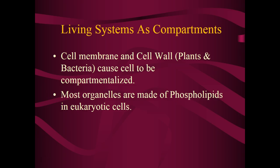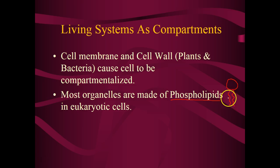Cell membranes are composed of phospholipids first of all, and phospholipids are the main component of any cell membrane. When we look at any cell membrane, phospholipids are by far the most important molecule because they are the molecule actually producing the membrane. If you remember from Chapter 2, a phospholipid is a phosphate head with two fatty acid tails. The head is polar and the tails are nonpolar; the head is hydrophilic and the tails are hydrophobic.